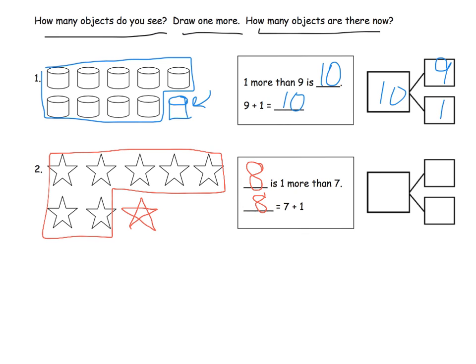So what would our number bond look like? Our number bond could look like a seven here, a one here, and then an eight here. The eight is not negotiable. It's got to go there. But the one, some students could put the one on top and the seven on the bottom and that would be perfectly fine.